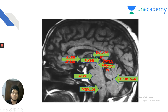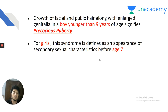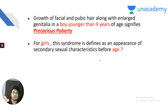The answer is pinealoma — option C. Pinealoma arising from the pineal gland compresses the tectum of the midbrain and causes superior gaze palsy. This syndrome is called Parinaud syndrome. Precocious puberty is defined as growth of facial and pubic hair with enlarged genitalia in a boy younger than 9 years, and in a girl younger than 7 years.